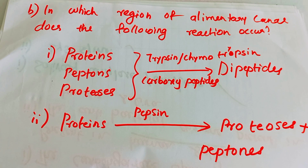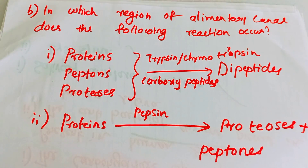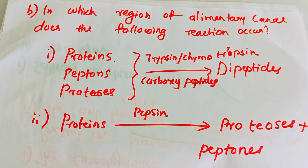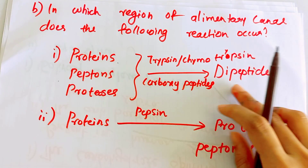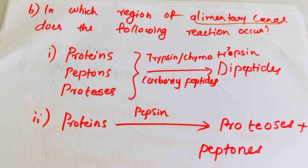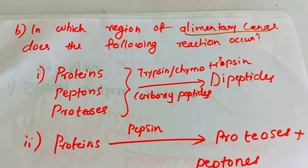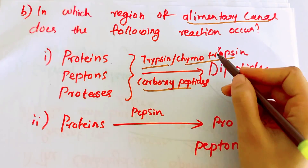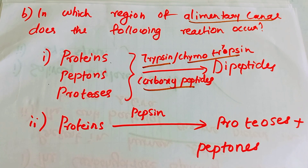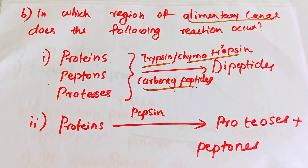In which region of the alimentary canal does the following reaction occur? Proteins and peptones are converted to dipeptides. The answer is the intestine. The enzymes involved are trypsin, chymotrypsin, and carboxypeptidase — these three enzymes act in the intestine.